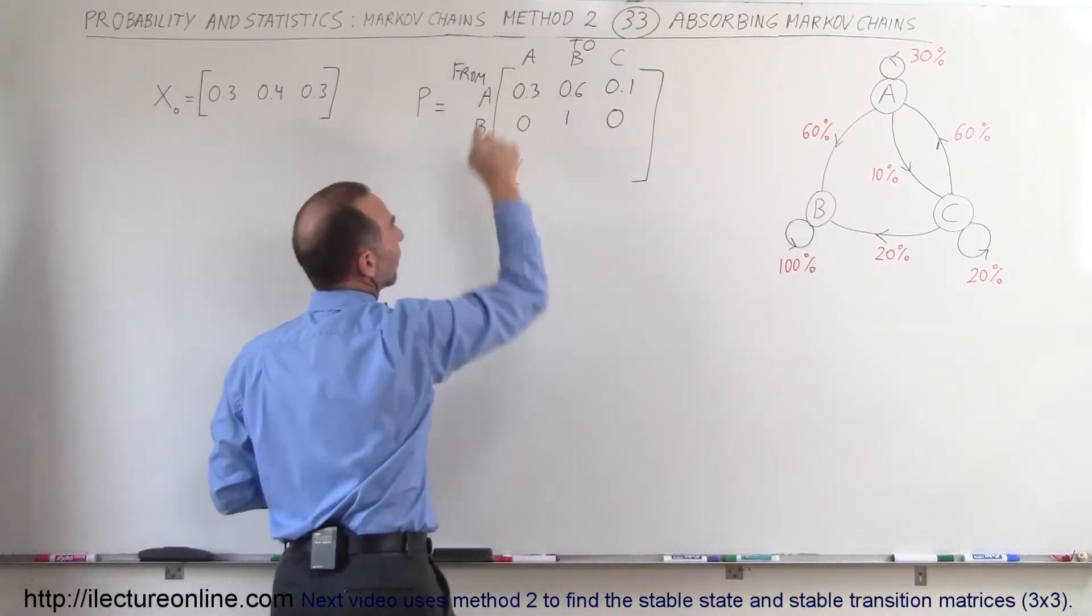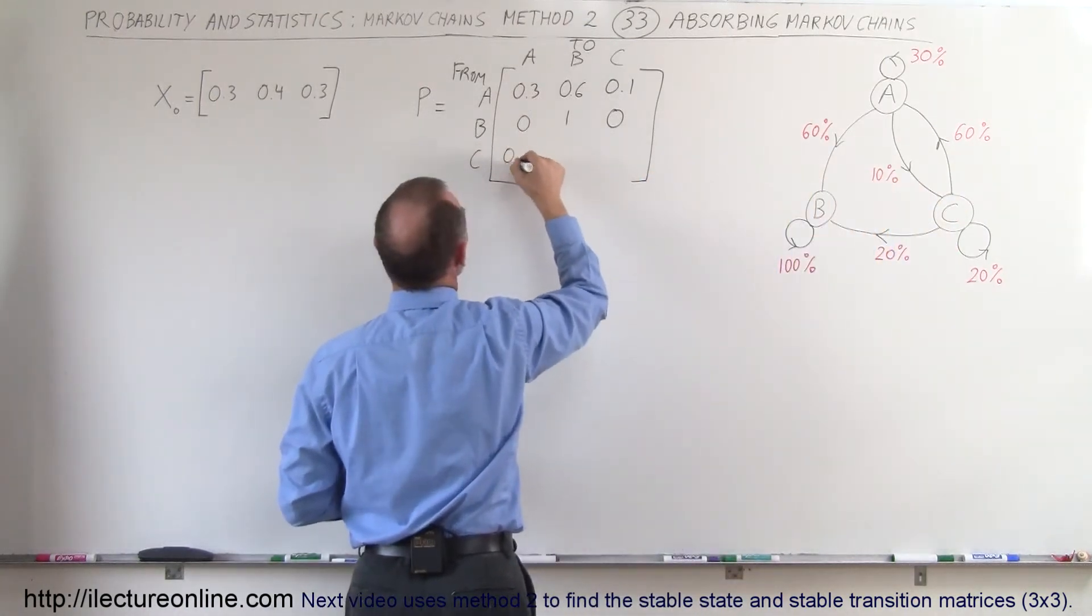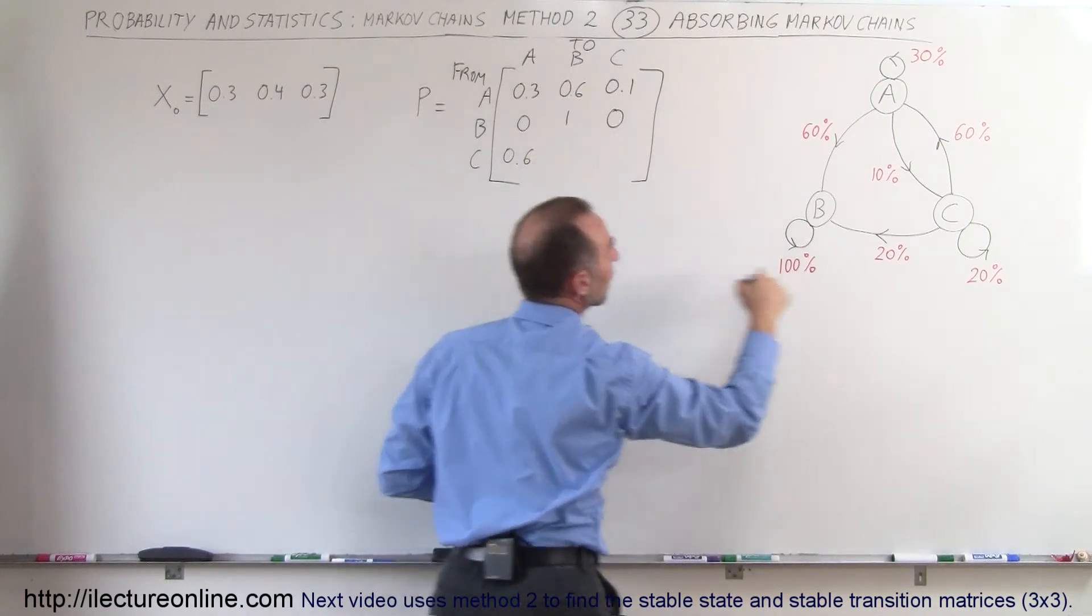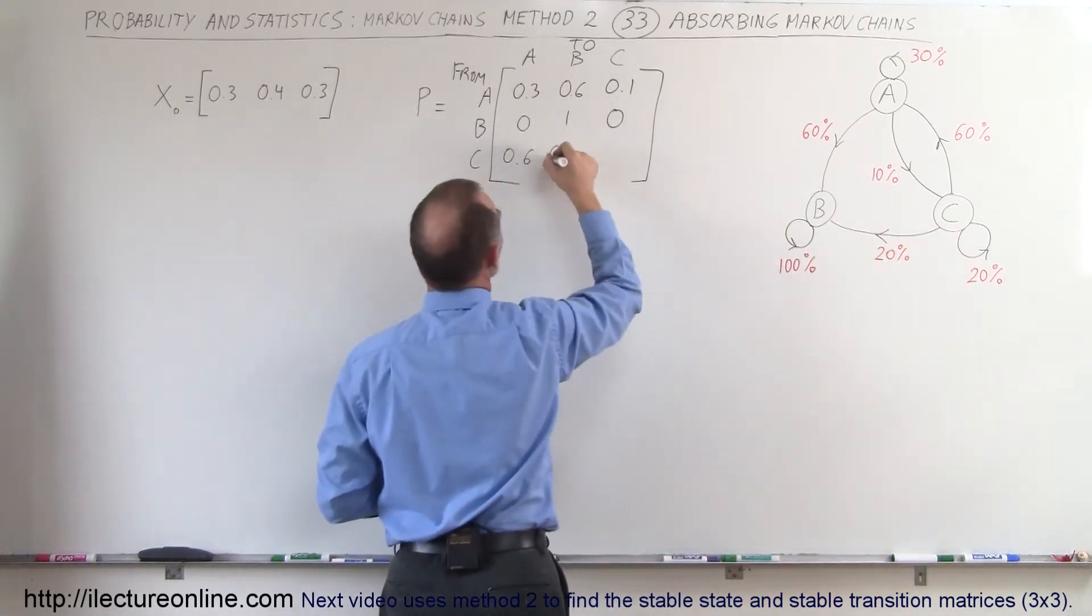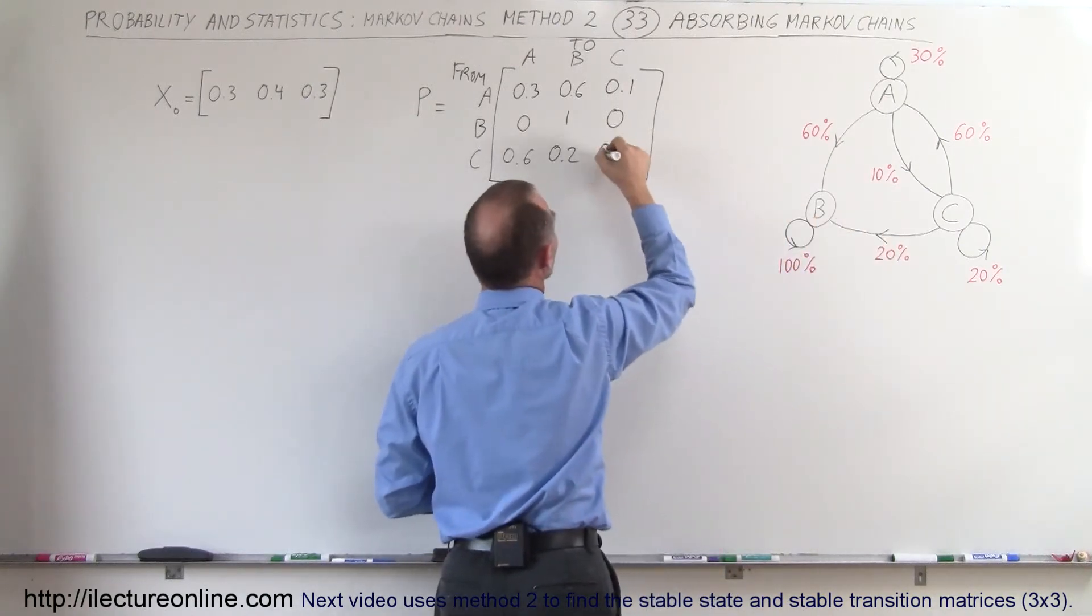from C to A, from there to there, C to A that's 60%, so 0.6. From C to B, that would be 0.2. And from C staying at C, that's right here, 0.2.